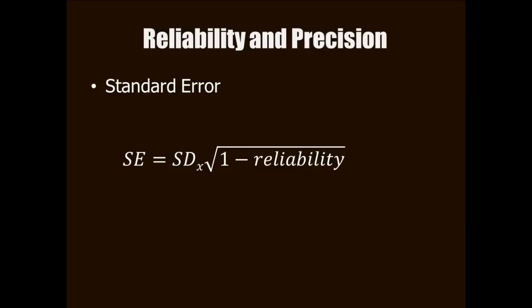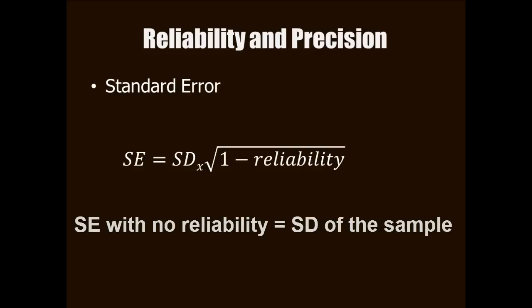But what if your scale had no reliability? Literally, 0 reliability. Let's plug a reliability estimate of 0 into this equation. Under the square root sign, we'd have 1 minus 0, which equals 1. The square root of 1 is 1. We'll multiply 1 times the standard deviation of scores in the sample, and you get the standard deviation. So what is your standard error? The standard error in this scenario is the same value as the standard deviation of the scores in the sample. Thus, for any given person, getting their score on this scale tells you absolutely nothing about a person's trait level. You get as much variance when you measure a single person over and over as you do when you measure the entire sample.